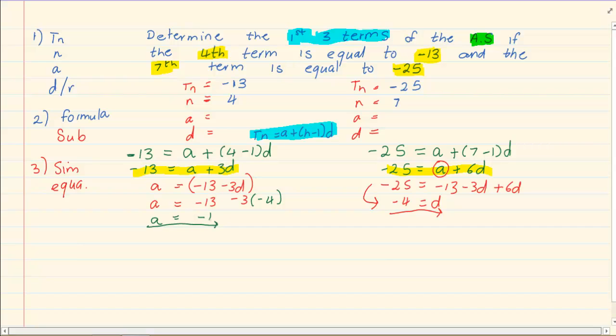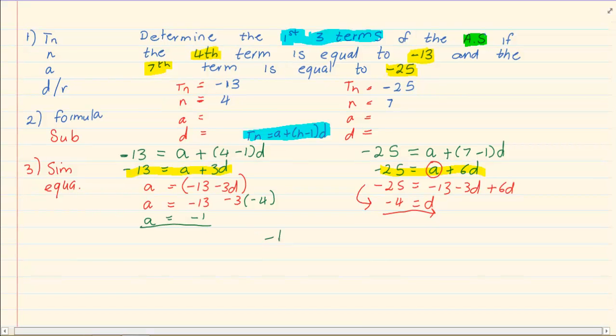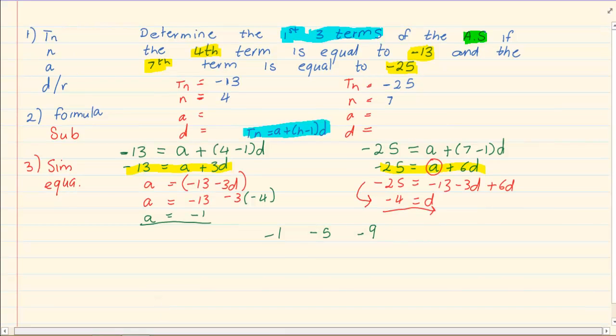Once you are done finding A and D, you need to go back and check, did you answer the question? The question states, determine the first three terms. You are not done. You have A and D. So the first term you know is minus 1. To determine the second term, you know that it's A plus D. So it's minus 1 minus 4, which gives you minus 5. Then we have minus 9, A plus 2D. Once you have done that, you have given them term 1, term 2, and term 3. Make sure that when you are doing these sums that you answer the question. Many people stop at A and D and then they don't continue with the final answer. Thank you for watching.